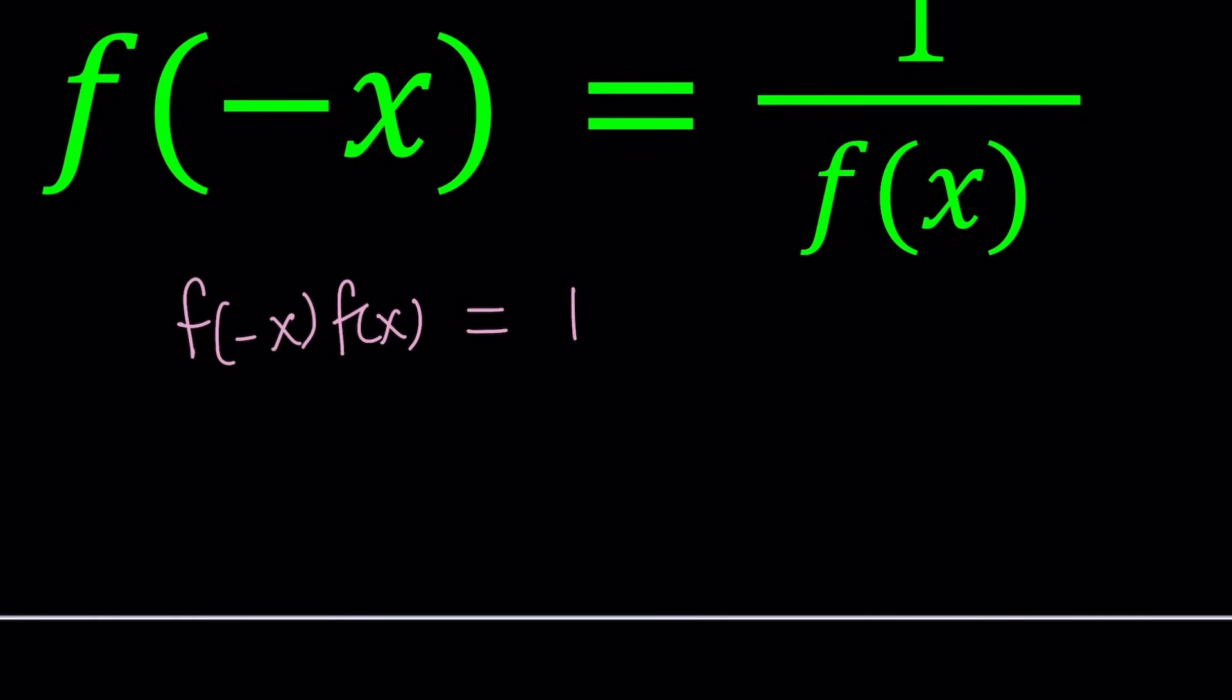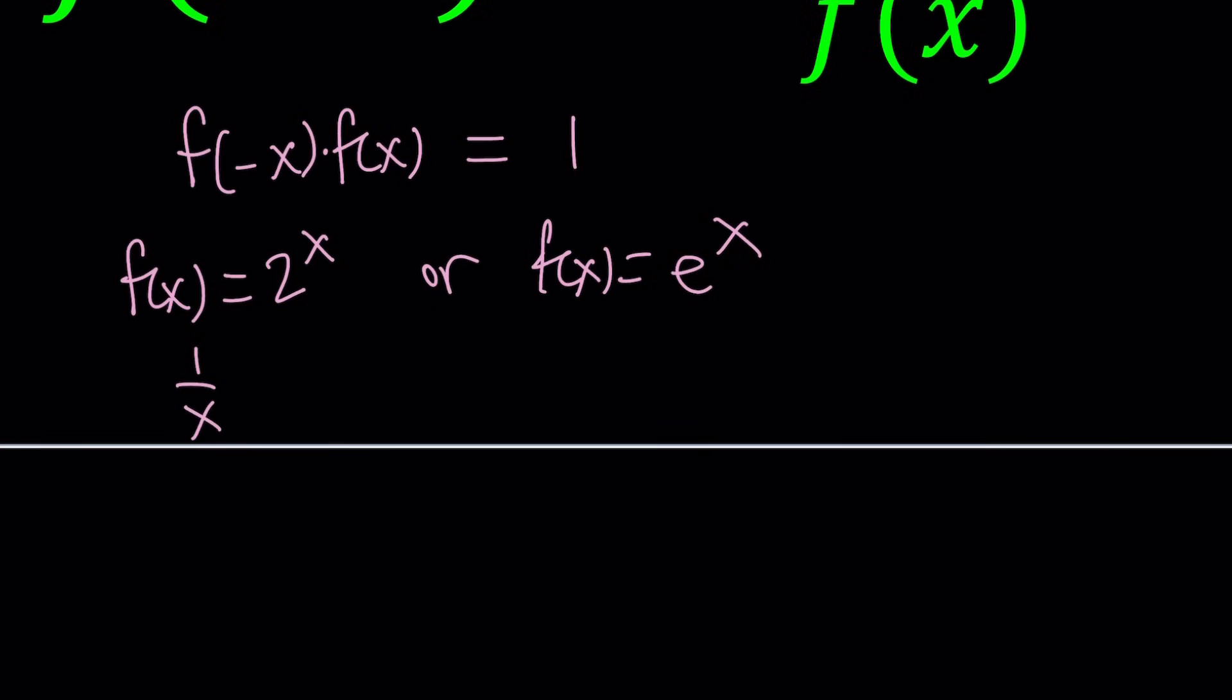At this point I'm thinking something that takes x as an input and takes negative x its opposite as an input, they're reciprocals. How is that possible? That kind of reminds us of exponential functions, doesn't it? So maybe f of x can be something like 2 to the power x or even e to the power x, which is the best exponential function. What about 1 over x or just x? What about trigonometric functions, sine and cosine?